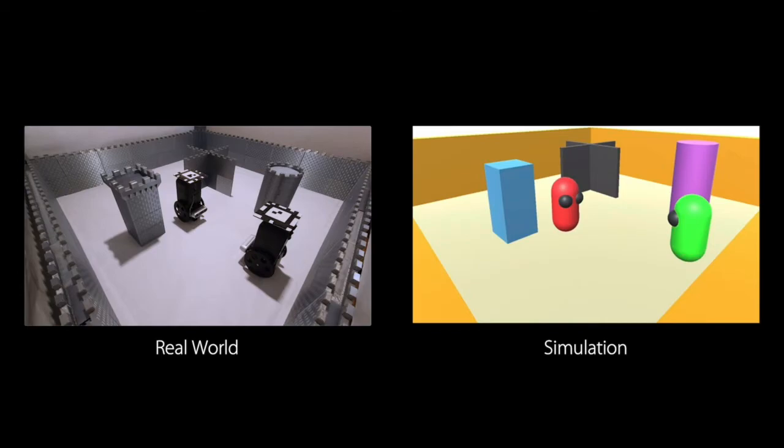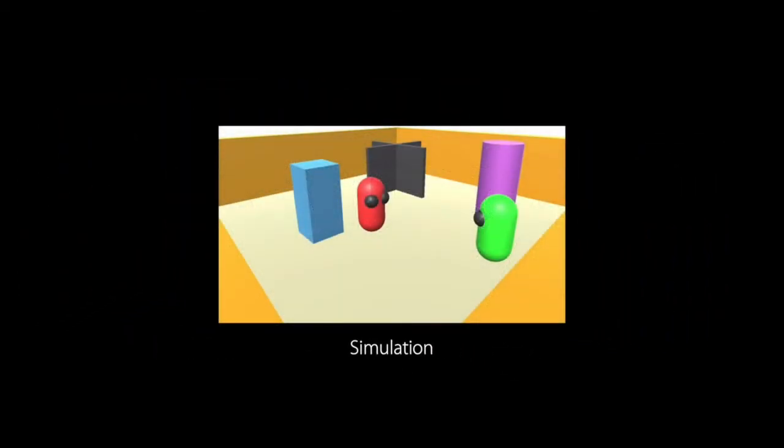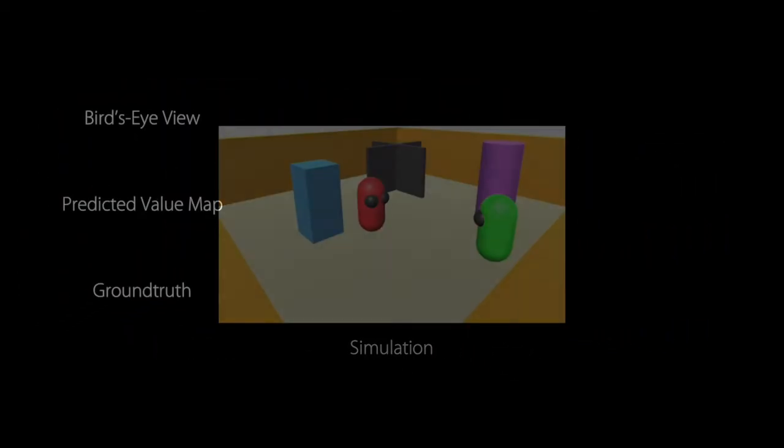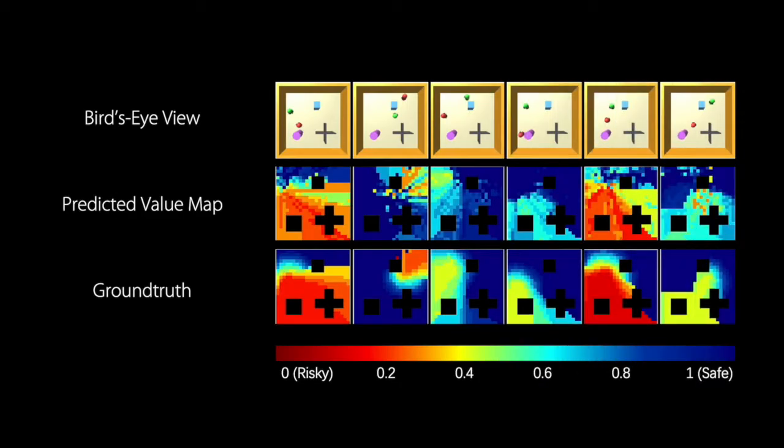We perform extensive analysis of our method by building a simulation environment. For example, by running the hider robot to all possible goal locations, we can obtain the ground truth value map to perform quantitative analysis. As shown here, our hider robot produces highly accurate value maps.